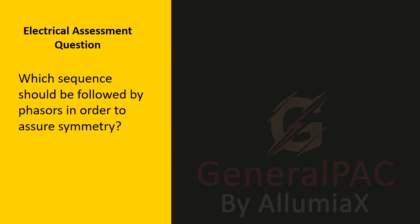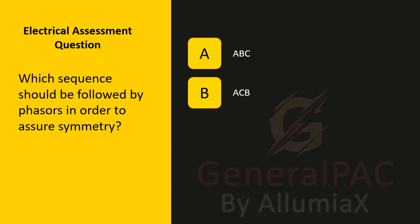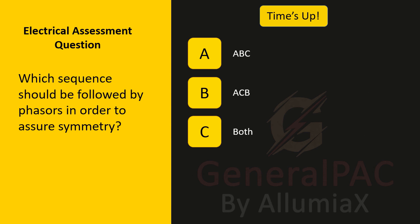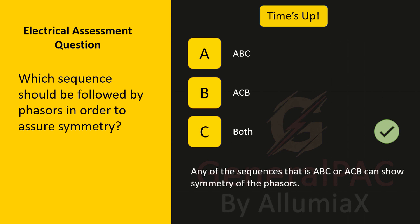What sequence should be followed by phasors in order to ensure symmetry? Should they be ABC, ACB, or can they be both? They can be both. Any of the sequences, ABC or ACB, can show symmetry of the phasors, as long as they are equal in magnitude and the phase angles A, B, and C are displaced 120 degrees from each other.